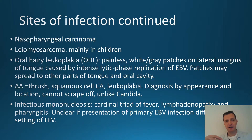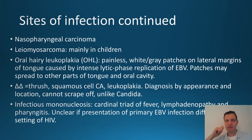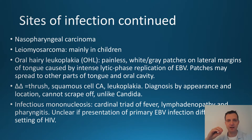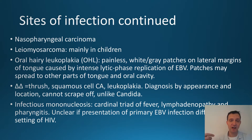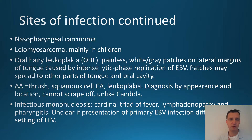EBV can also be associated with nasopharyngeal carcinoma and leiomyosarcoma, mainly in children or young adults. An important one is oral hairy leukoplakia, which looks like oral thrush but unlike thrush cannot be scraped off. This is effectively a form of EBV-related lesion that is treatable, but you need to see a doctor promptly — first for a HIV test, and secondly because it can sometimes be misdiagnosed. It could also be squamous cell carcinoma, which requires a different type of treatment from oral hairy leukoplakia.